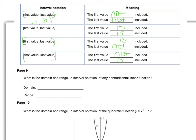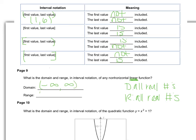This comes in handy with domain and range. For any non-horizontal linear function, the domain is all real numbers and the range is also all real numbers. In interval notation, that means it goes from negative infinity to positive infinity — that's what 'all real numbers' means, it goes on forever and never stops.